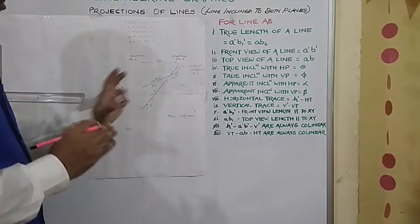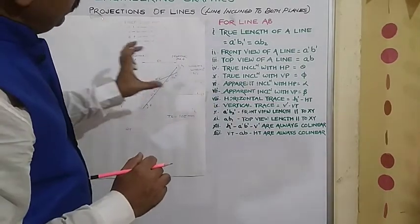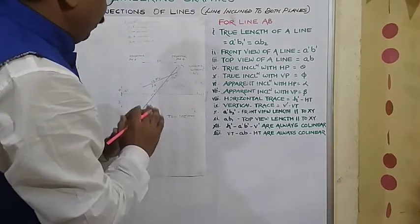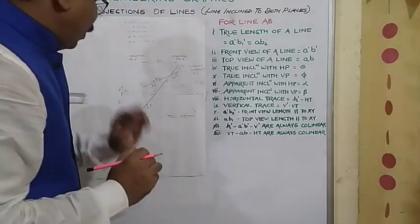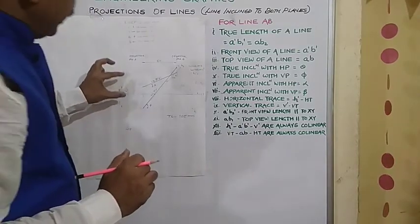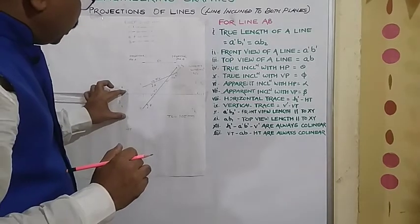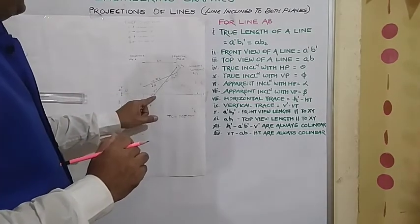So this is the problem in which end projector distance was given. So according to that a line we have found out theta, phi. We have found out horizontal trace HT, vertical trace VT.